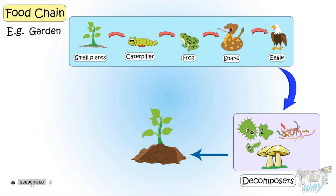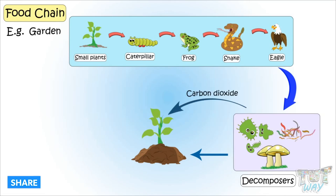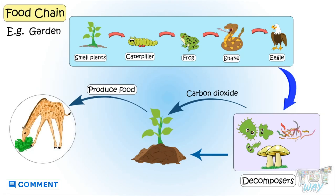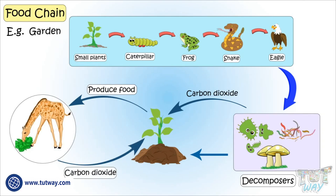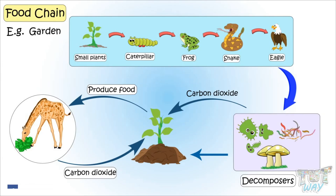Microorganisms, while decomposing animal waste, also release carbon dioxide to the air and water, which is also used by plants. Thus, plants produce food for animals, and animals give carbon dioxide for plants while breathing. Animals are also reduced to nutrients and carbon for plants when they die. So plants and animals are dependent upon each other.